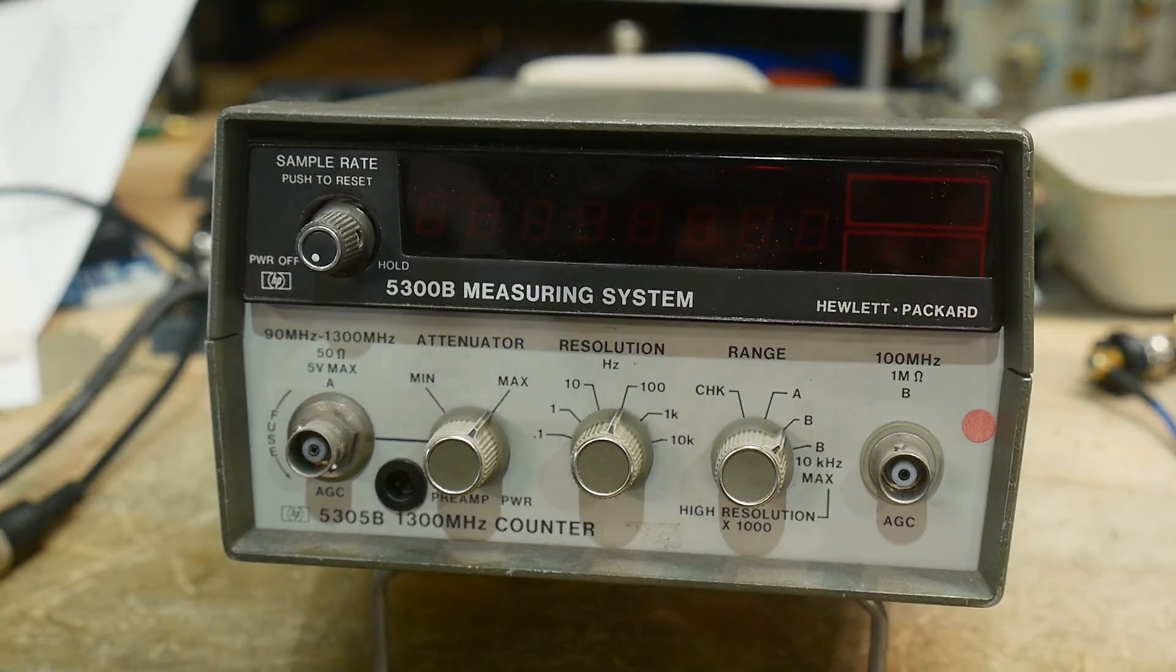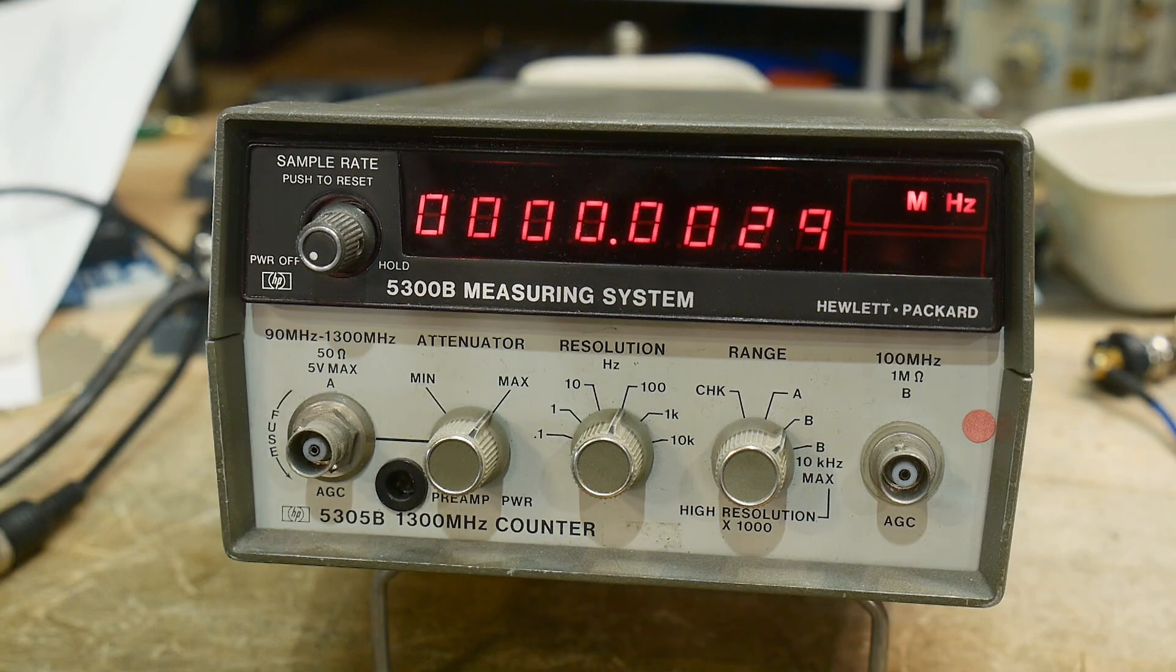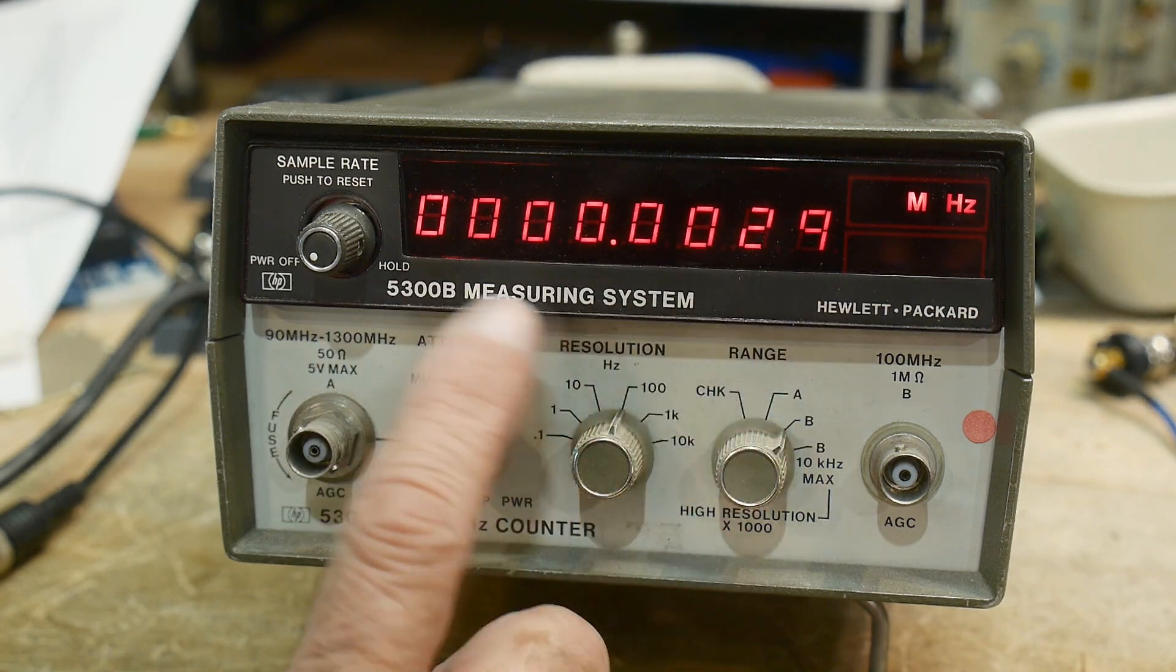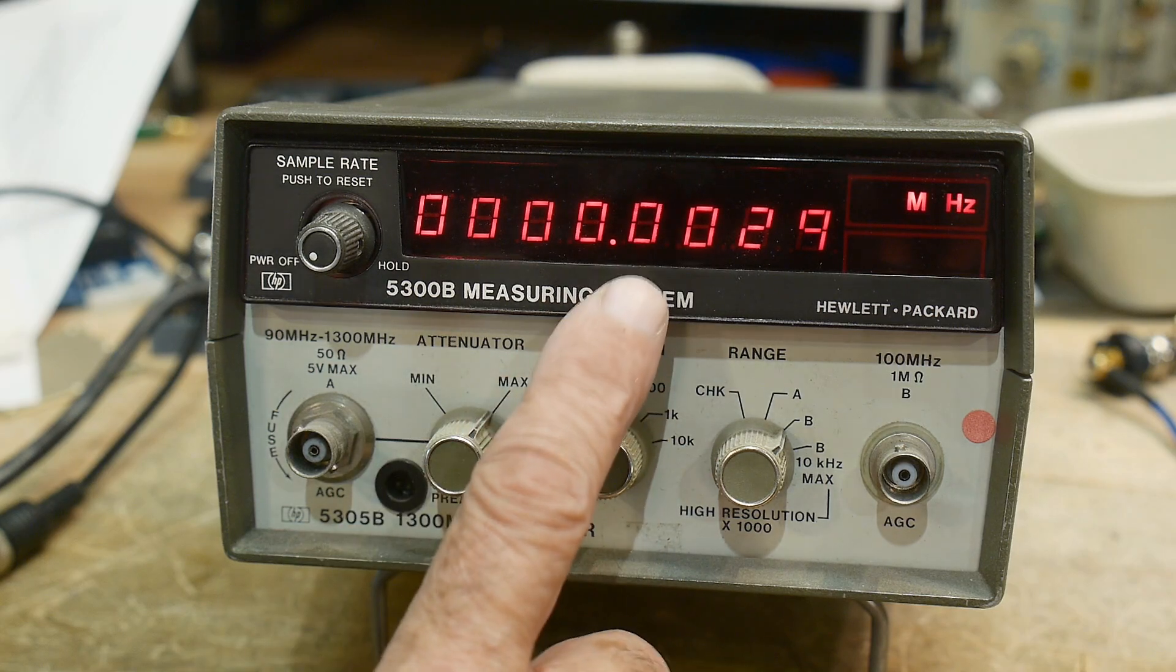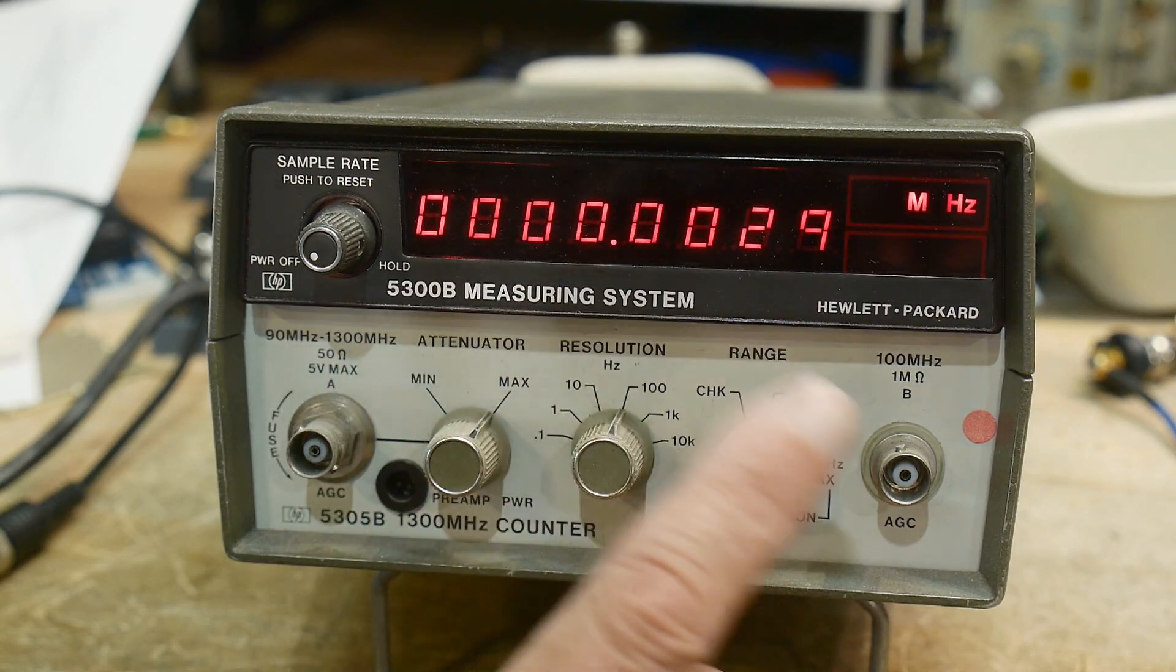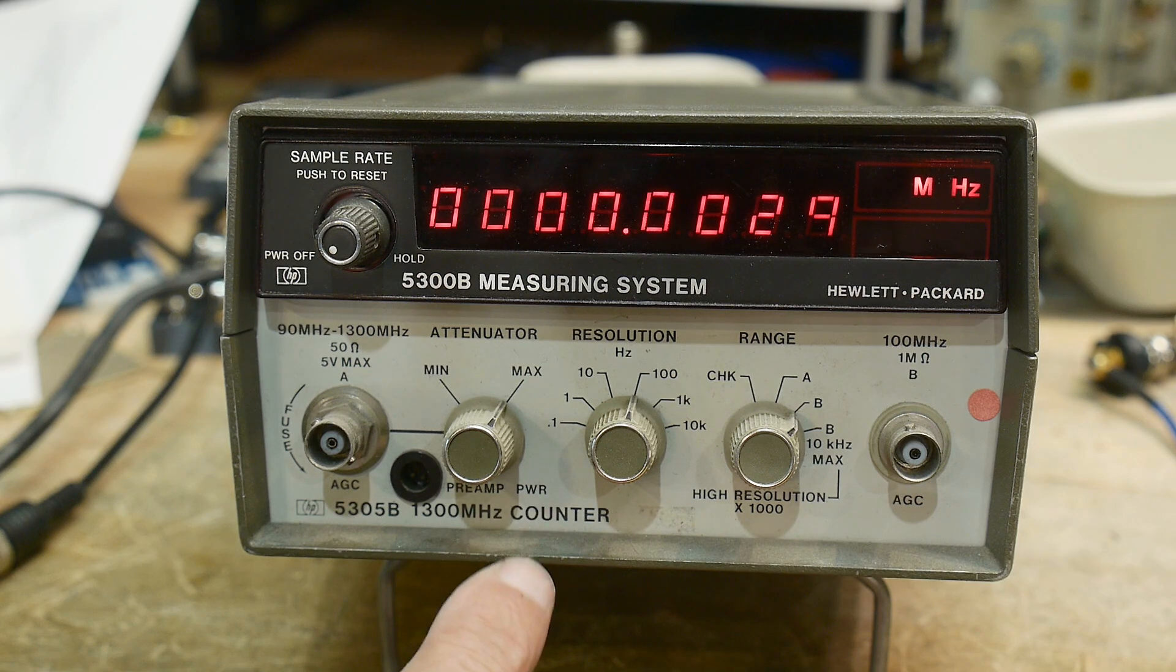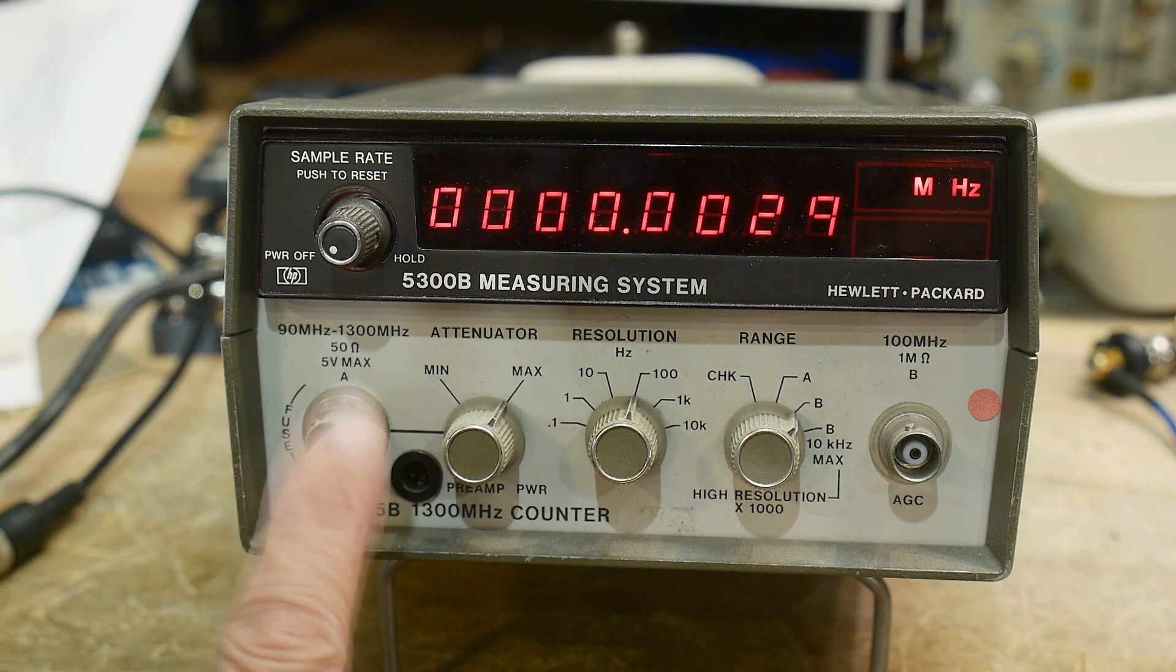To turn it on, you turn this knob here. There's a whole bunch of ranges for these things. The 5300B is the high-end top unit with the most digits. The bottom unit, the 5305B, goes up to 1.3 gigahertz. It has one input here that goes up to 100 megahertz, and this input goes from 90 megahertz to 1.3 gigahertz, so it has a pre-scaler in it.